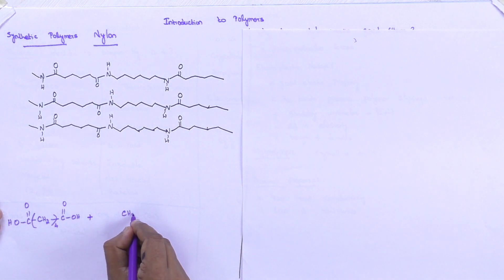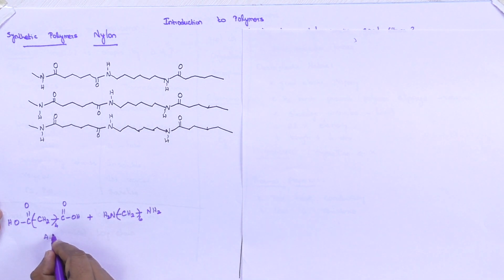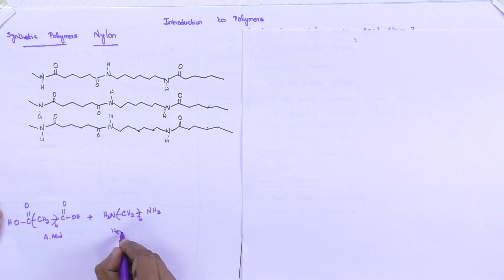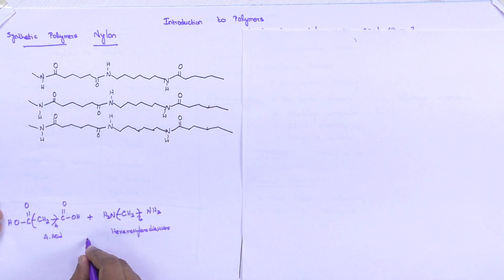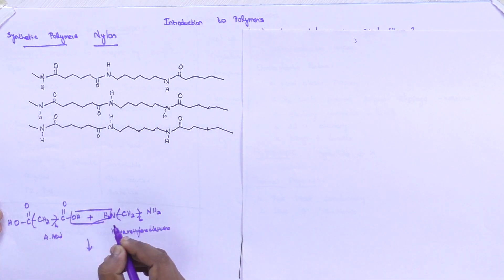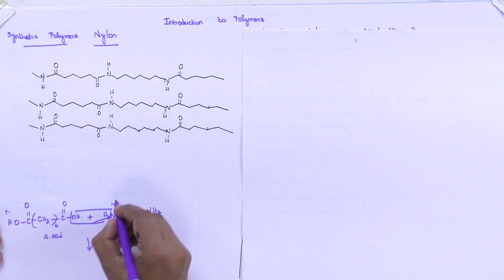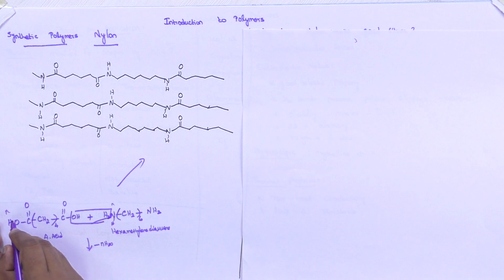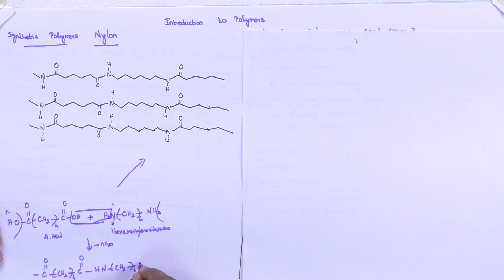Hexamethylene diamine is (CH₂)₆ NH₂. This is adipic acid and this is hexamethylene diamine. There will be removal of water — you take N molecules of these two, and the product formed will ultimately be this one. I am removing the OH and one of the hydrogens, giving: C=O — (CH₂)₄ — C=O — (CH₂)₆ — NH.